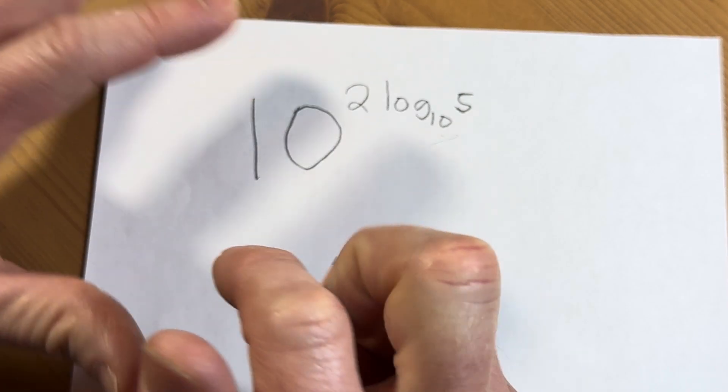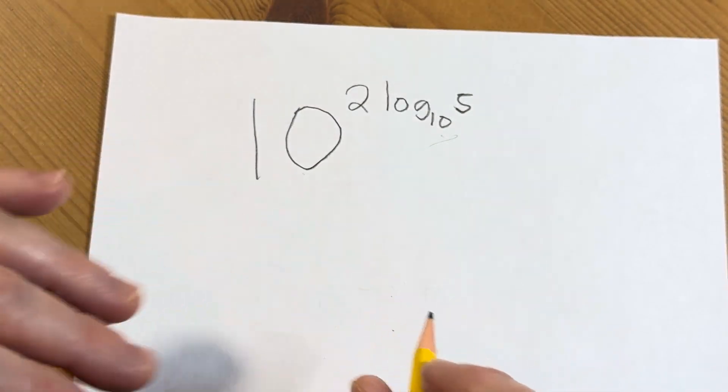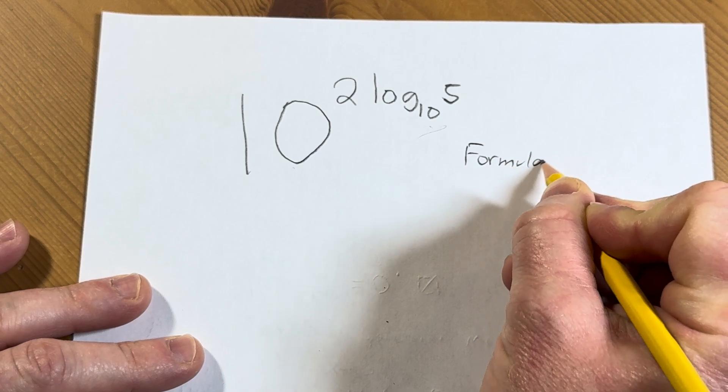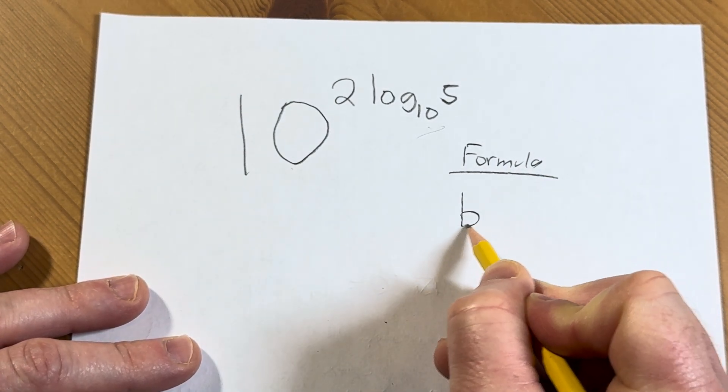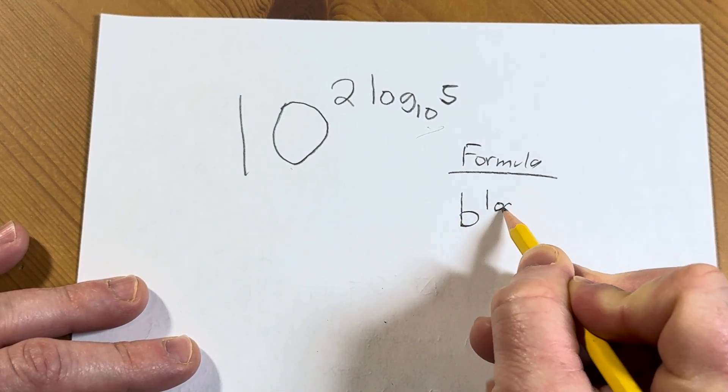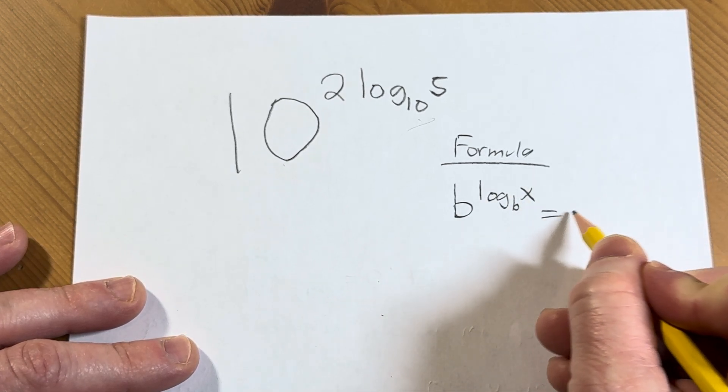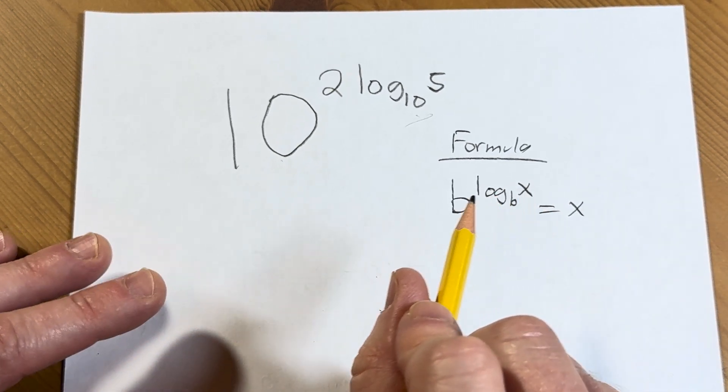So to work this out, there's a formula. There's a formula you can use. It's this one here. If you have b to the log base b of x, that's equal to x. So that's very, very powerful.